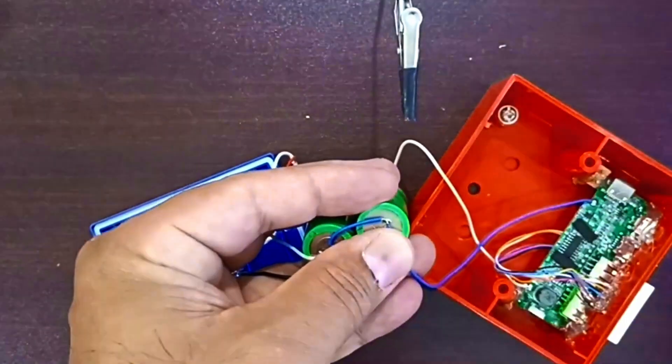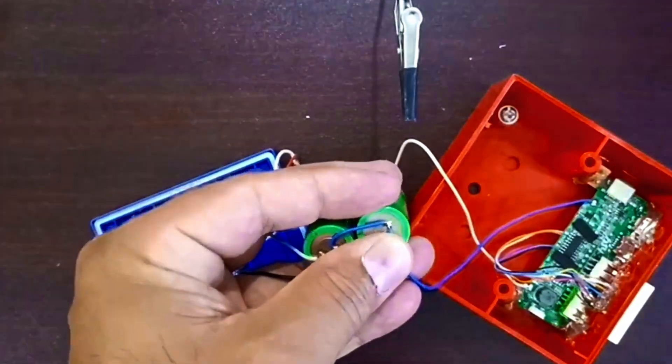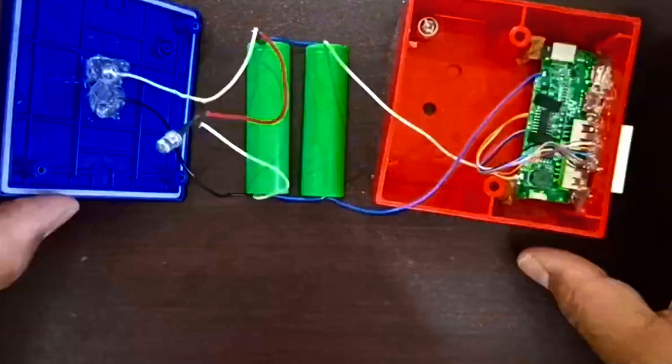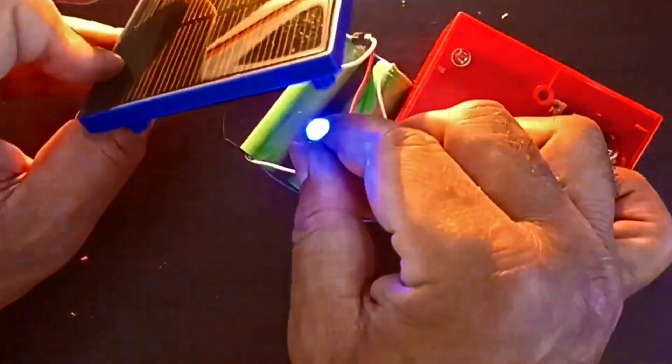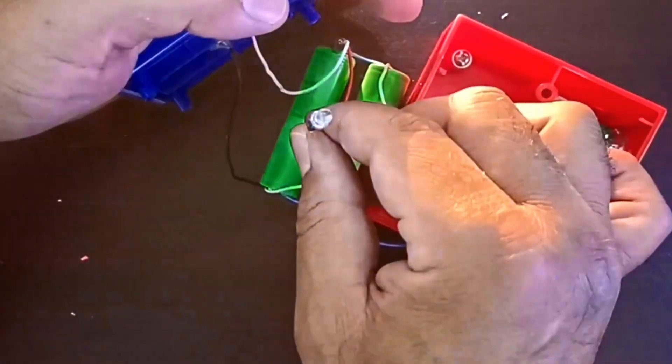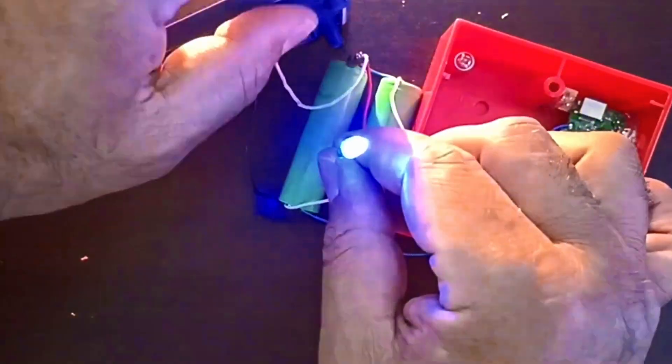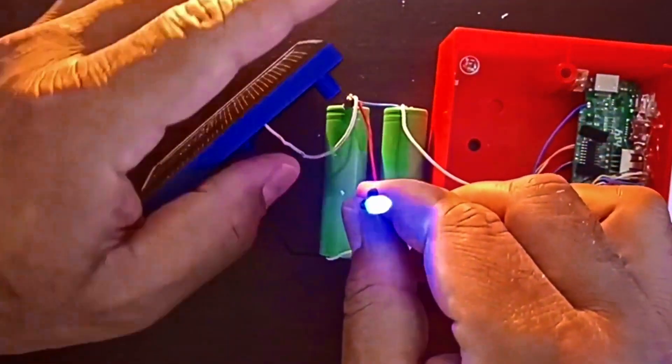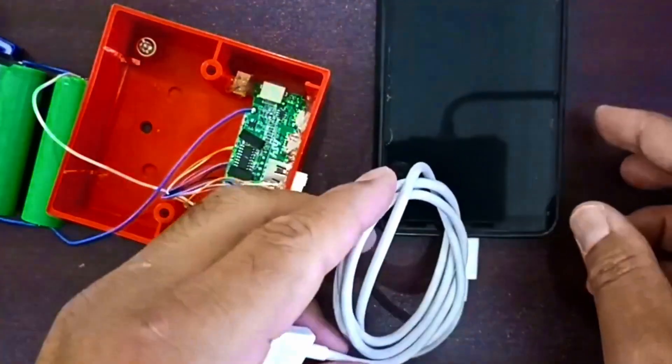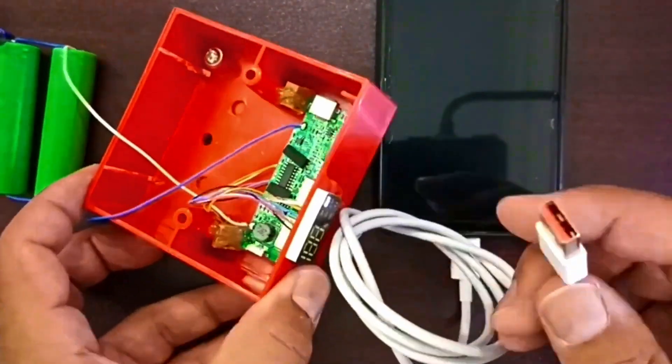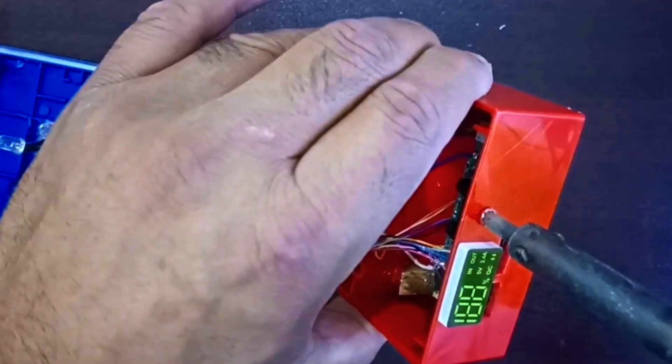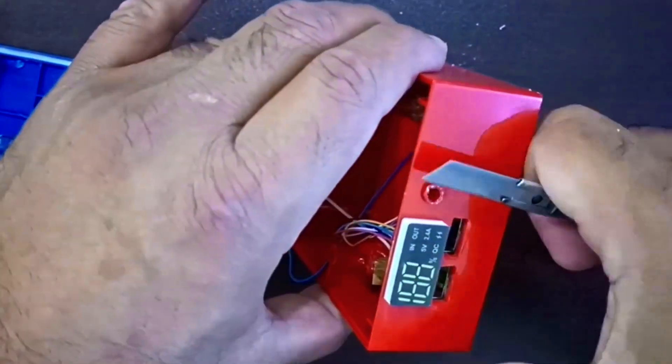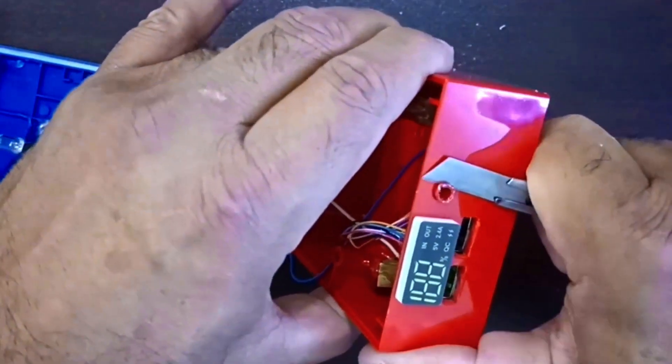Time to bring everything together. First quick test, solar LED lights up under the sun, that's a good sign. Plugging in a phone, display shows 88% and boom, charging! Making a tiny hole for the solar LED so we can see when it's active.